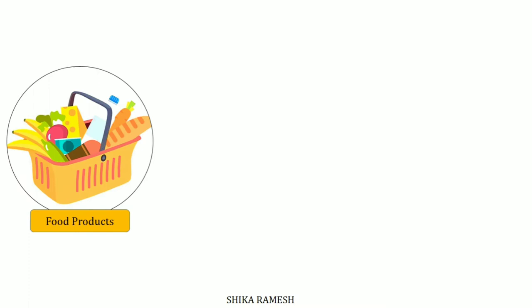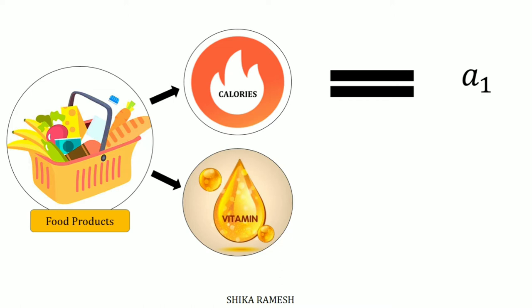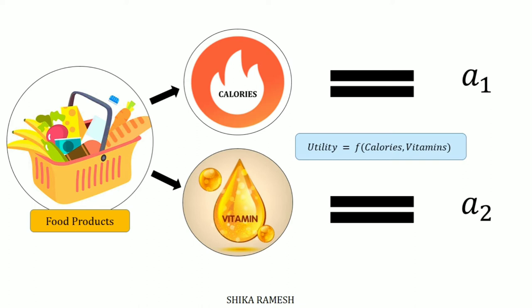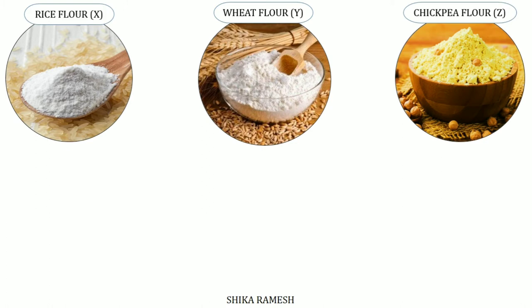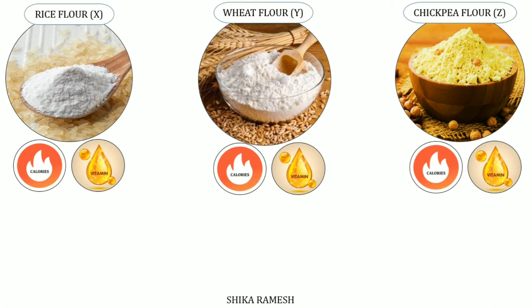We shall now see Lancaster's model with food products as an example. When we take up food products, the common features or characteristics we can see are calories and vitamins. Let us denote calories as A1 and vitamins as A2. Lancaster's model assumes that utility is a function of these attributes — that is, individuals attain utility from the calories and vitamins they receive from purchasing the food products. Suppose there are three food items: good X being rice flour, good Y being wheat flour, and good Z being chickpea flour. Even though these three are different goods, they possess the same characteristics of calories and vitamins and come under the same category of flours.